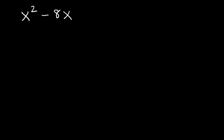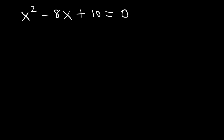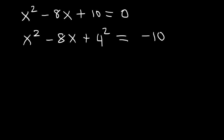So here's the next example: x squared minus 8x plus 10 is equal to 0. Just like before, we're going to move the 10 to the right side. Don't forget to leave a space. Now let's complete the square. Half of 8 is 4 — don't worry about the negative sign, make it positive — and don't forget to square it. So we need to add 4 squared to both sides. Whatever you do to the left side, you must also do to the right side.